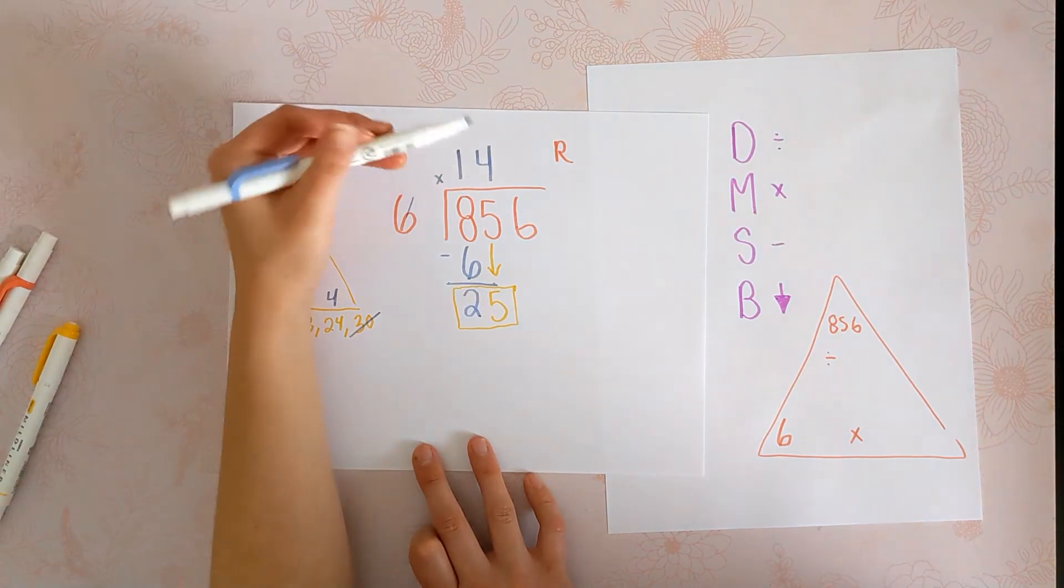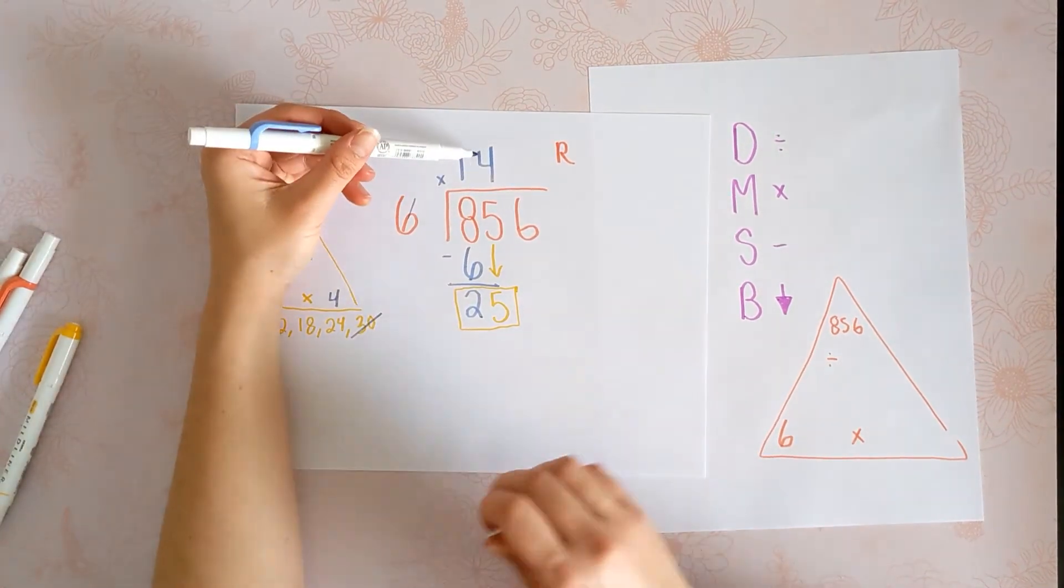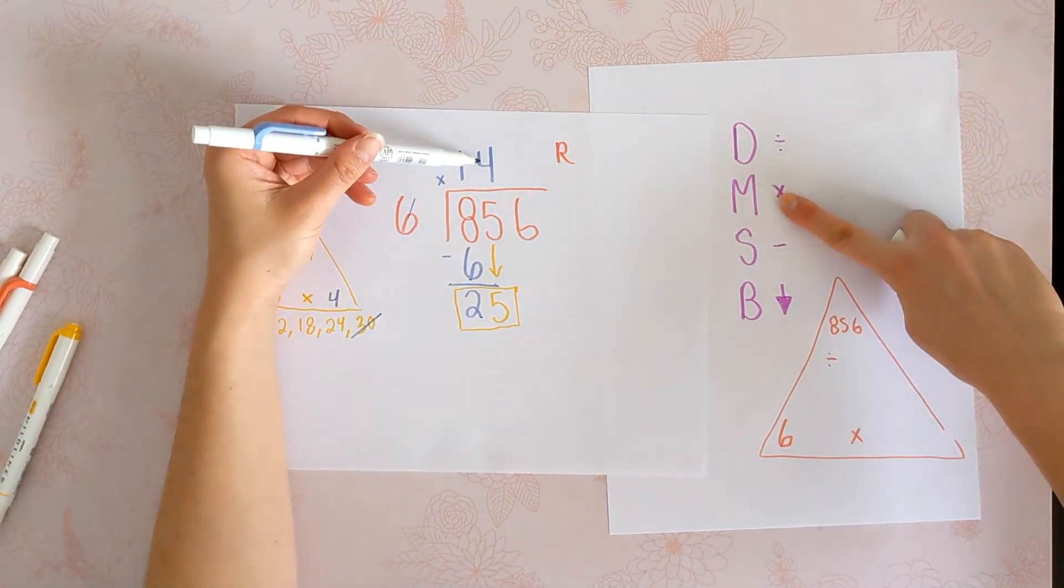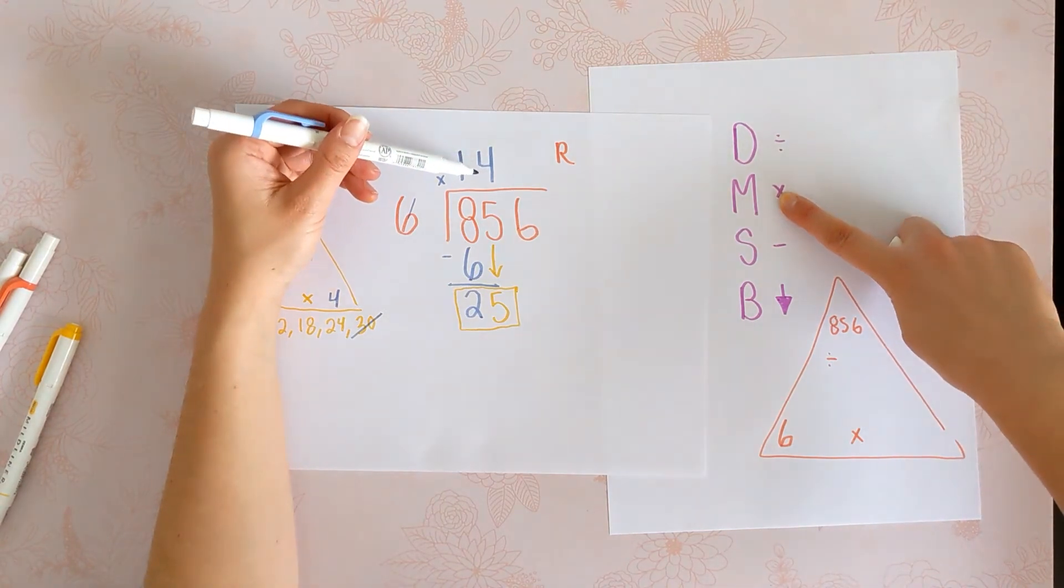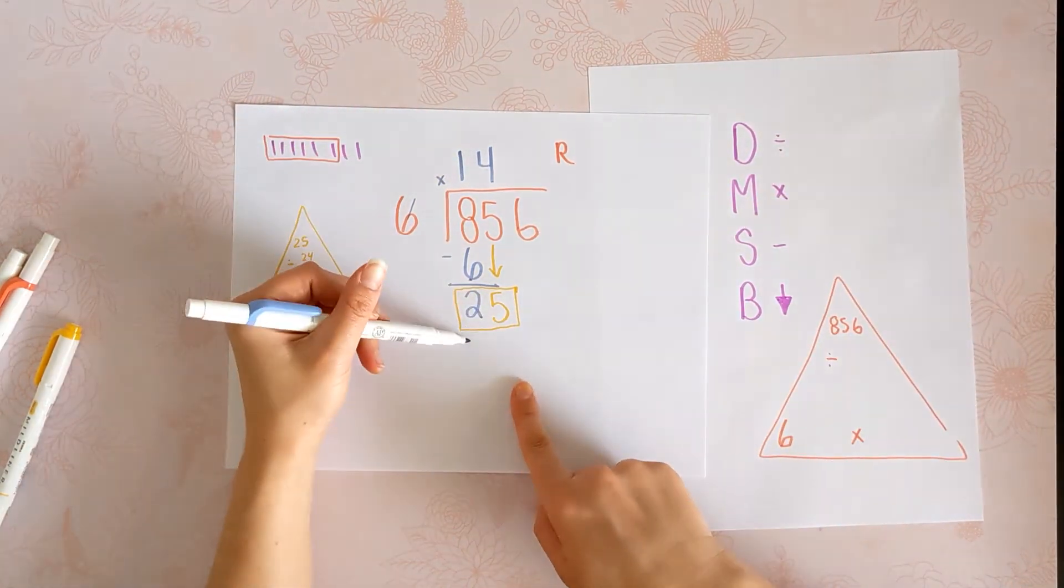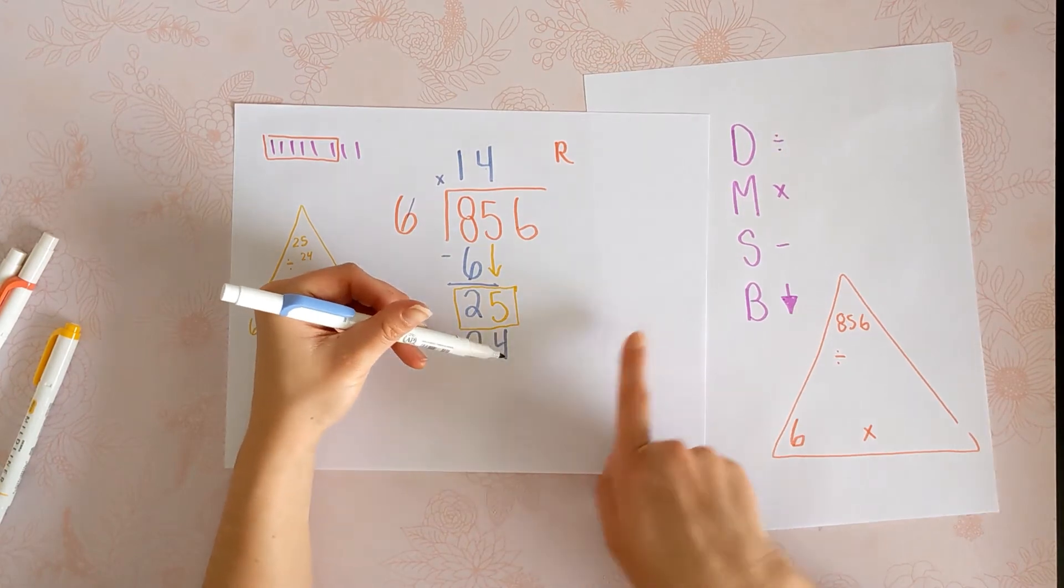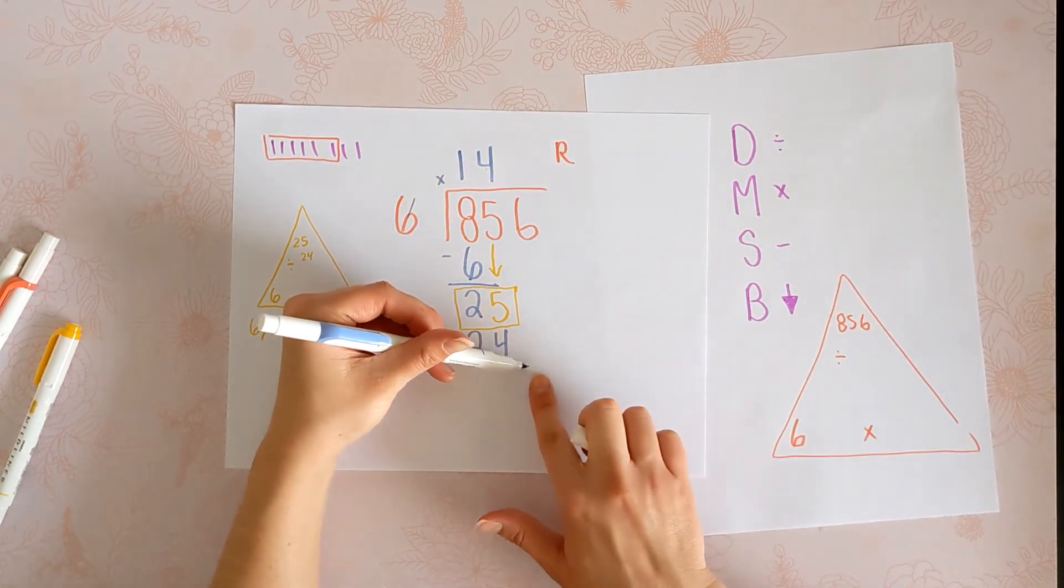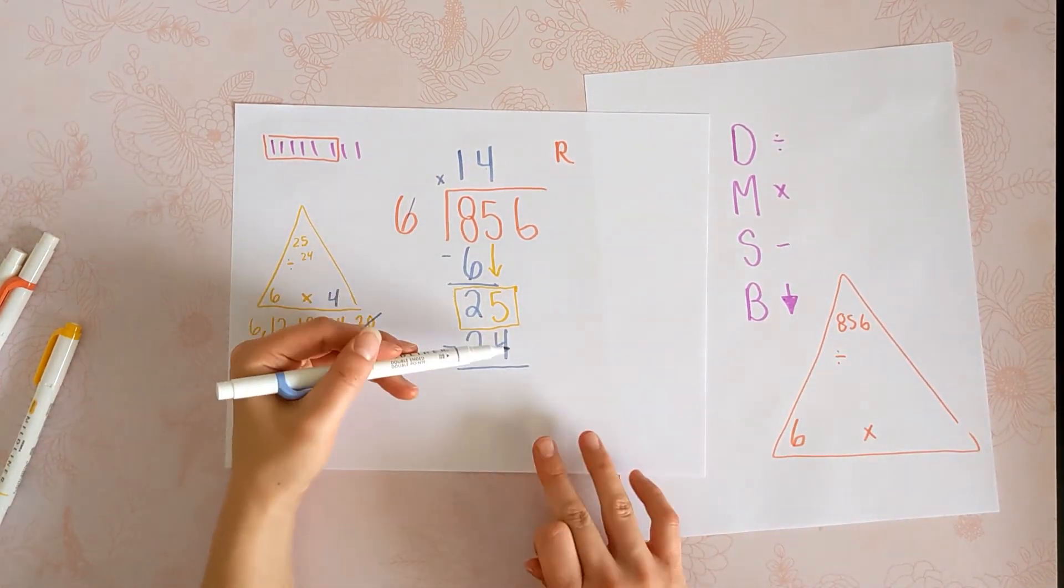And what's our next step? With the last thing we touched, we're going to multiply it by 6. 4 times 6 is 24. Now we subtract the last thing that we touched. 25 minus 24 is 1.